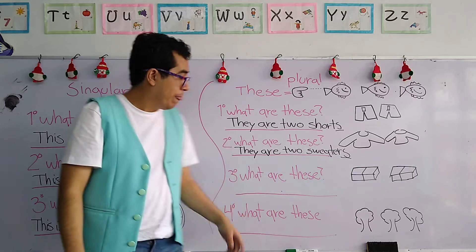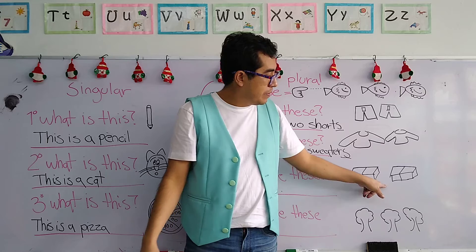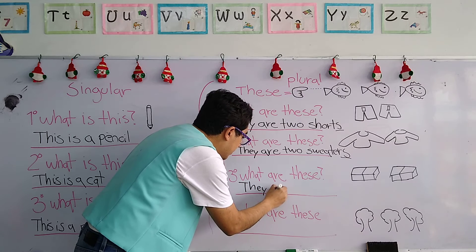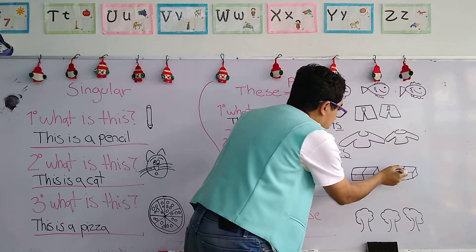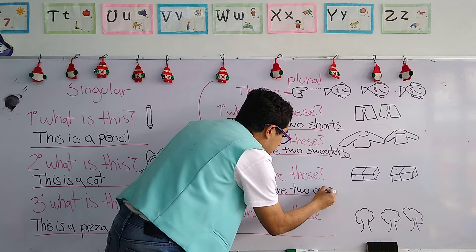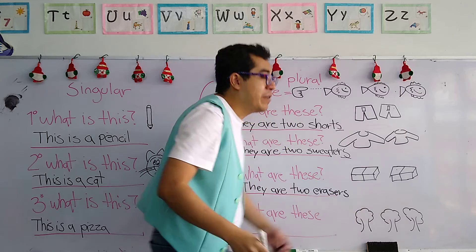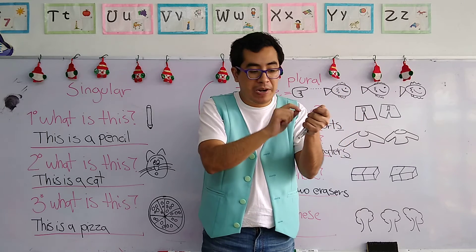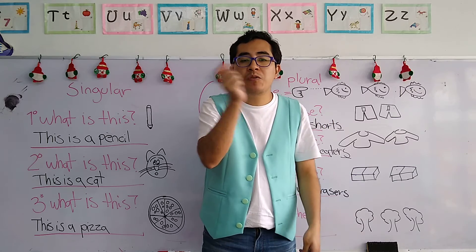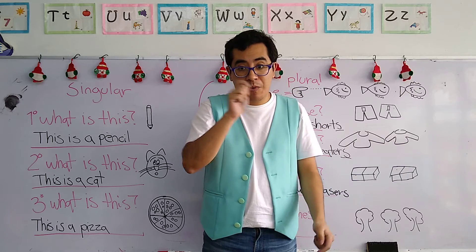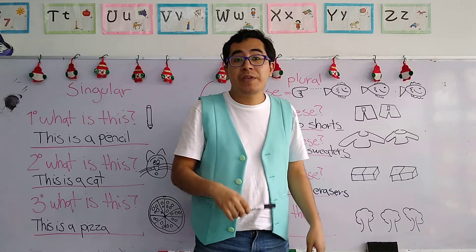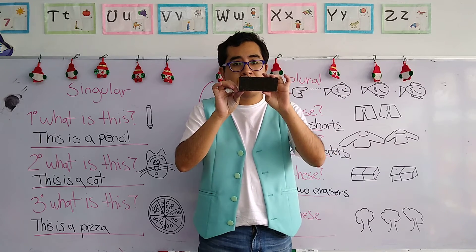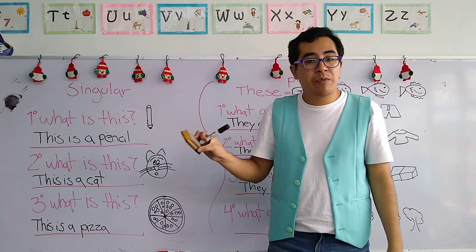Let's continue with the third question. Number three: 'What are these?' They are two erasers. Now, an eraser is an object to erase — para borrar un error que cometieron con un lápiz. We use an eraser to erase the mistake — para borrar ese error. The teacher also has an eraser right here. In this case, the eraser that I have is like a rectangle — it has a rectangular form. I use it whenever I make a mistake on the whiteboard.